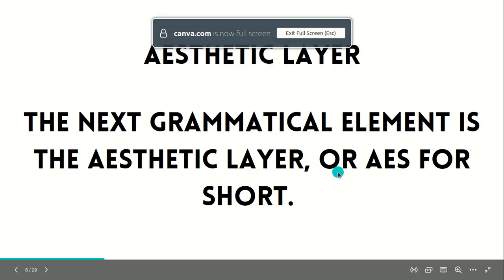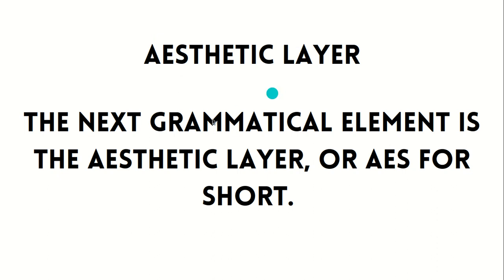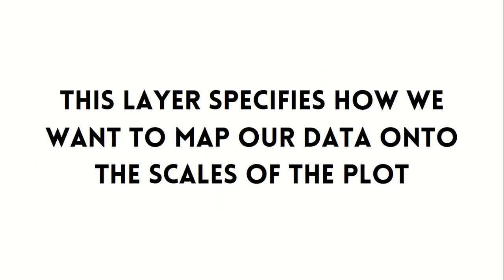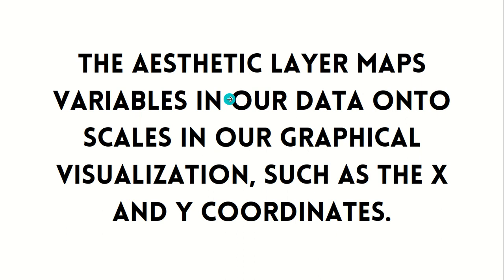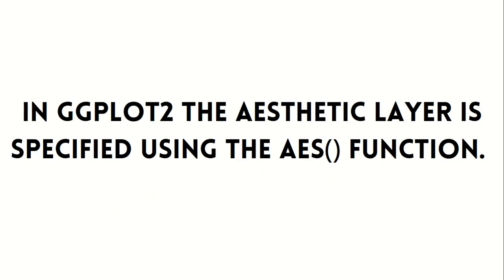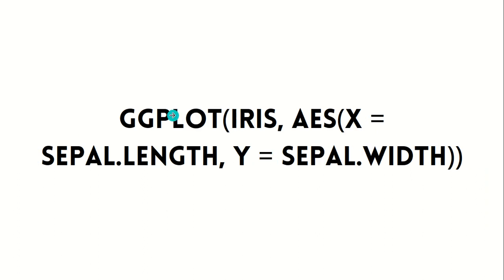Moving further, we have the aesthetic layer — the next grammatical element. We call it aes, short for the aes function, in which we define the scales. This layer specifies how we want to map our data onto the scales of a plot, such as the x and y coordinates. We'll define the axes using the aes function. For the iris dataset, the x axis will be sepal length and y will be sepal width.